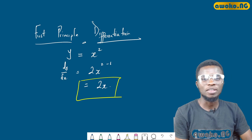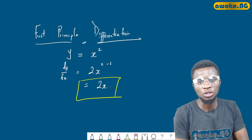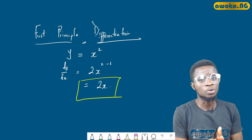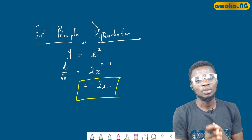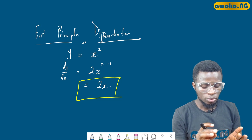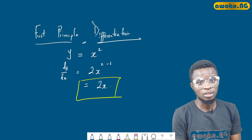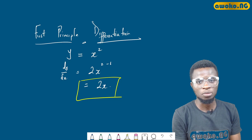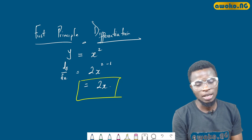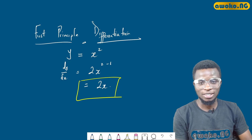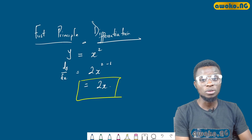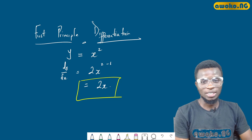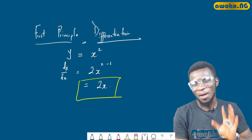Compare what we have here to what we had using the formula method — we get the same answer. Irrespective of the method you use, you will still get the same answer. However, whenever you are not specified to use a particular method, it is advisable to use the formula method because it gives you the answer faster. This is where we end today's class — see you in the next class where we will discuss other complex problems on differentiation using first principles. Bye for now.